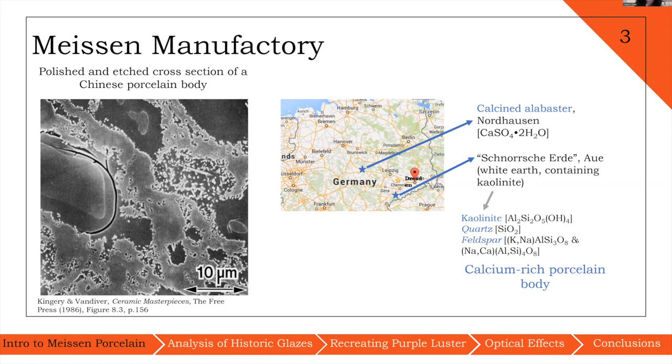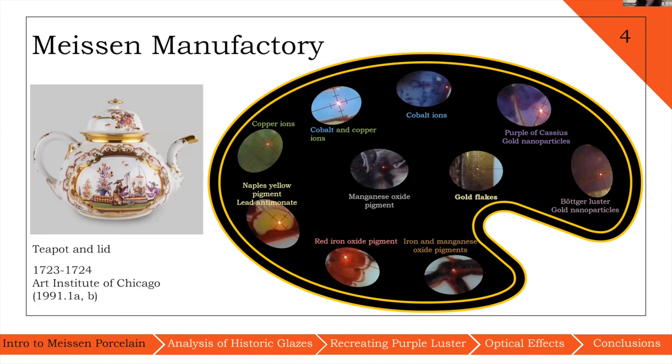The earliest porcelain bodies from Meissen, which are referred to as Böttger porcelain, combined powdered alabaster, which is a type of gypsum, with Schnorr's earth. In addition to kaolinite, Schnorr's earth was associated with some quartz and feldspar. This led to a really calcium-rich porcelain body during this period.